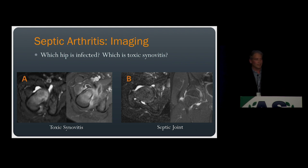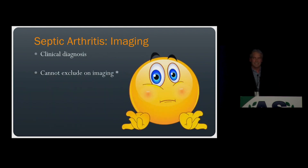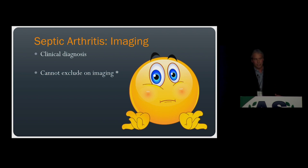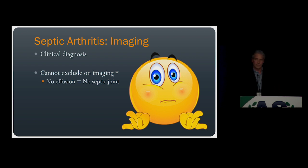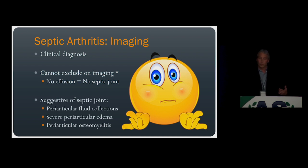The point is that septic arthritis is a clinical diagnosis. It's really difficult to exclude on imaging — with one caveat: if you don't have a joint effusion, you don't have a septic joint. But when we image patients, a majority of the time they'll have some joint fluid, particularly in larger joints, and we'll be stuck where we can't exclude a septic joint. Even so, there are findings that can suggest septic arthritis: periarticular fluid collections, severe periarticular edema, and periarticular osteomyelitis.